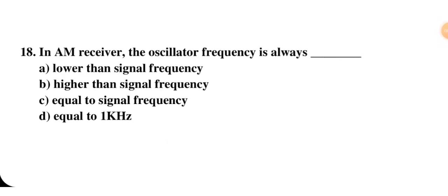In an AM receiver, the oscillator frequency is always — lower than, higher than, equal to the signal frequency, or equal to 1 kHz. The oscillator generates a carrier signal, which is a high frequency wave, while the input modulating signal is a low frequency audio signal. So the answer is B — higher than the signal frequency.